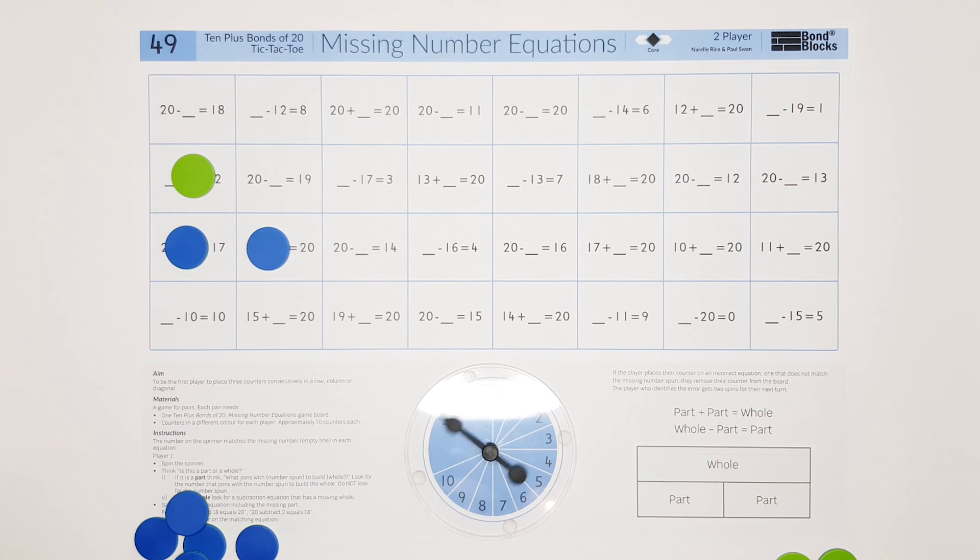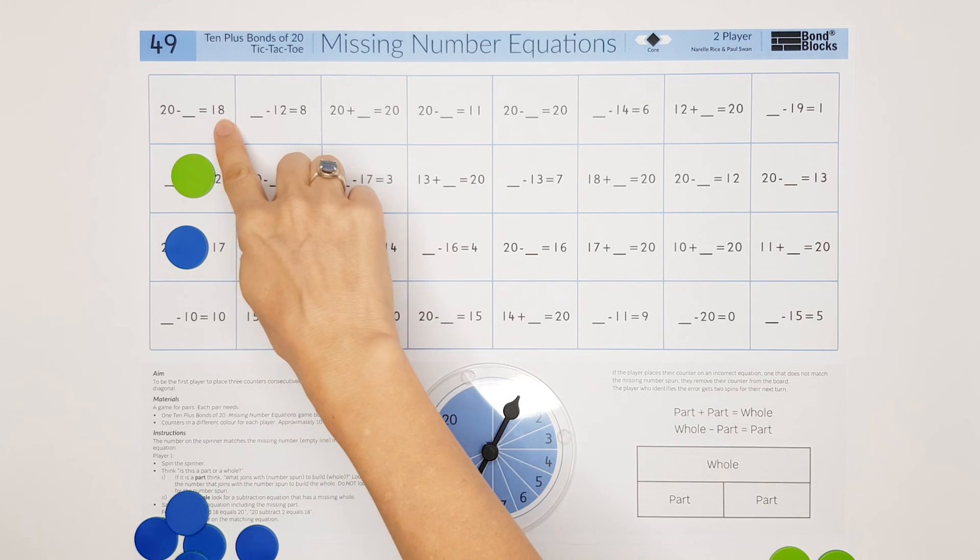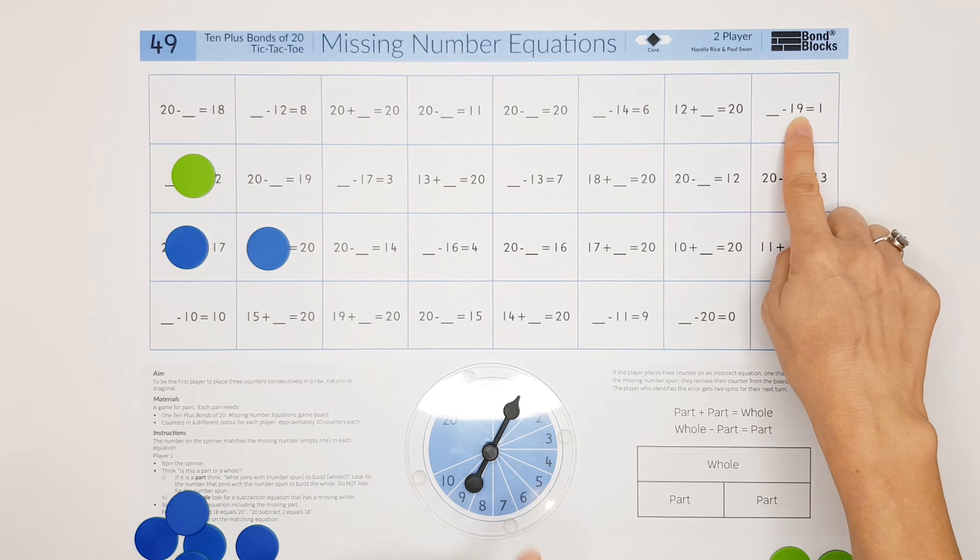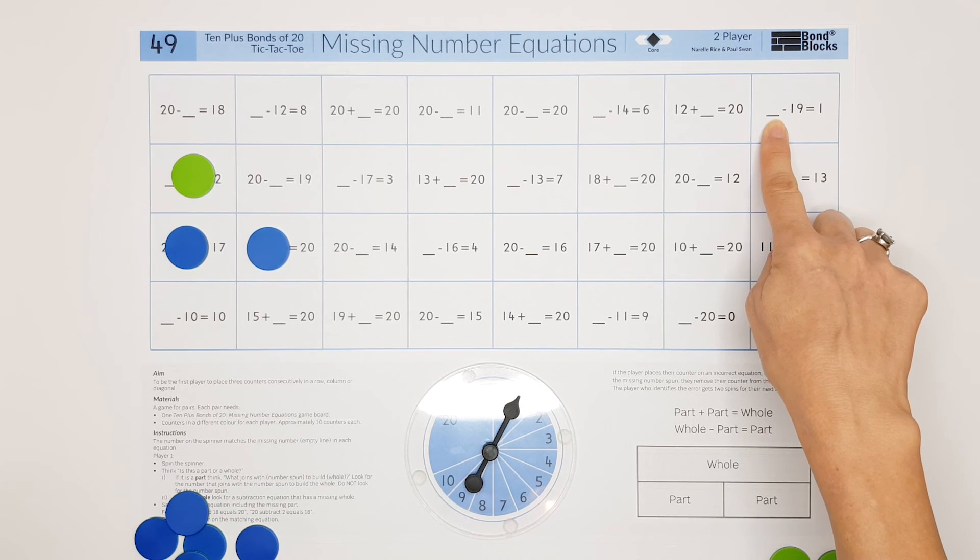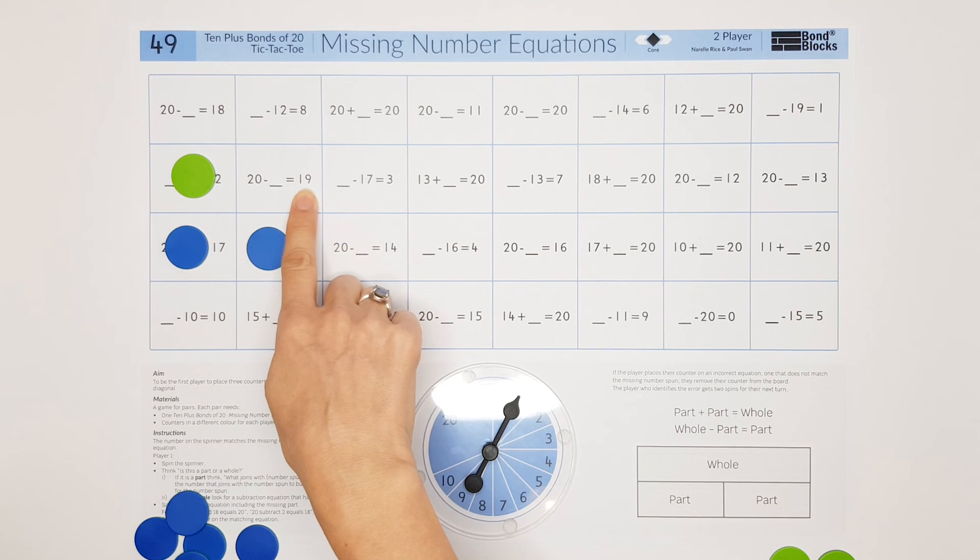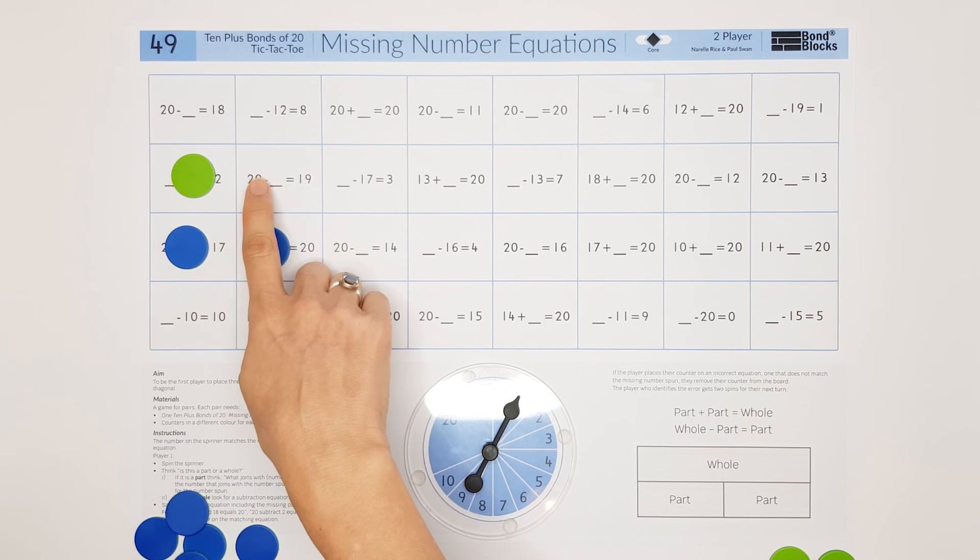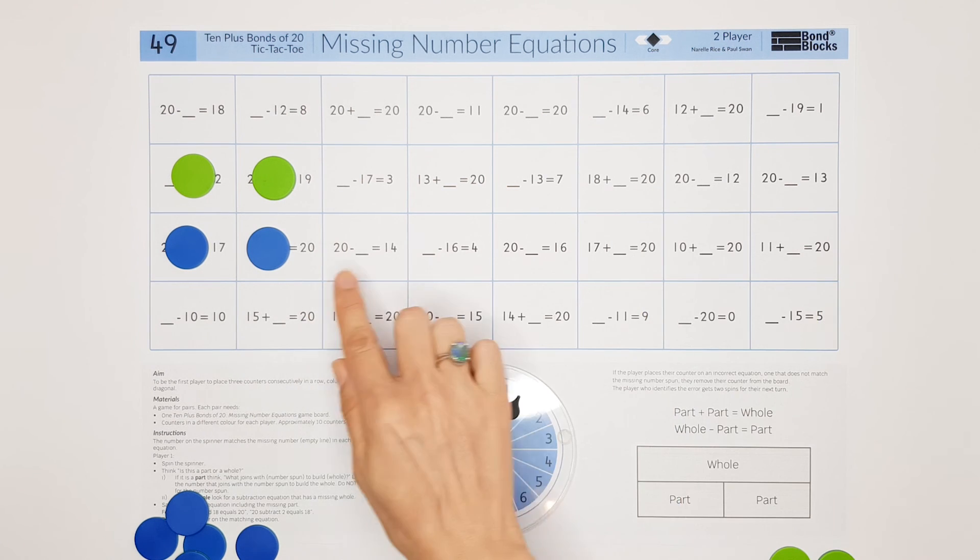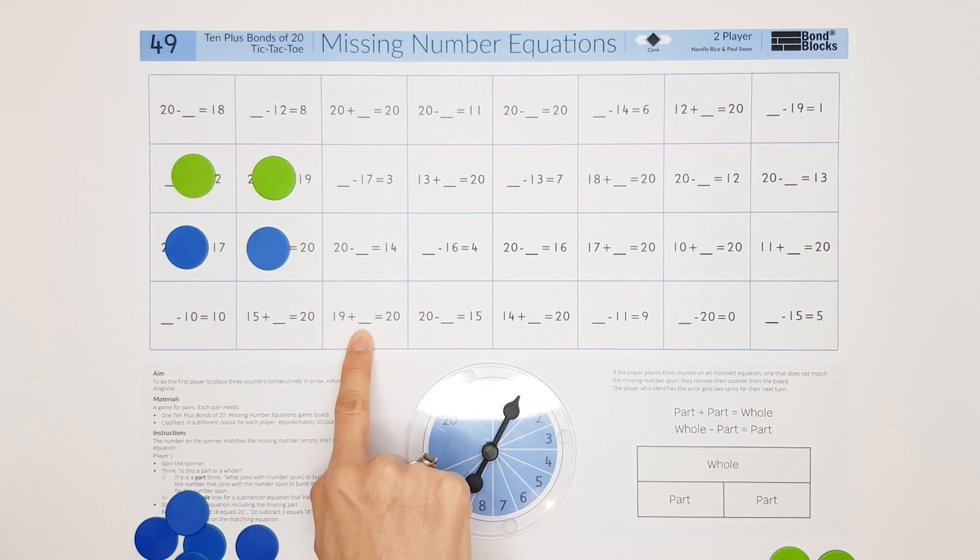I'll show one more example. I spin a 1. So I stop and think what joins with the 1, and that's 19. So I'm going to scan for 19. Here's one but I can't place my 1 there because that needs a whole of 20. So I'll keep working my way across. Oh, here's a 19. Will my 1 fit here? Yes. So I say 20 subtract 1 equals 19 and I'll put my counter there. There was also another one here that would have worked, but I'm going to choose that one.